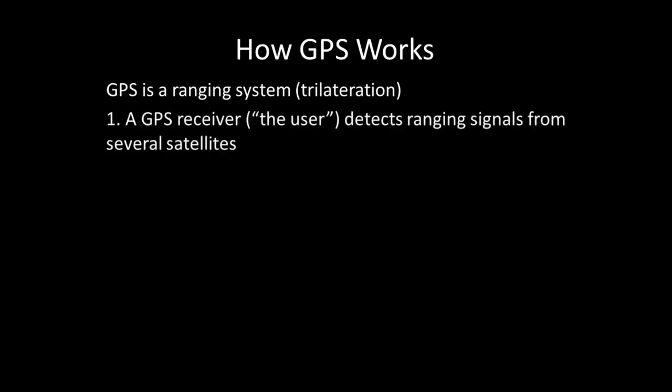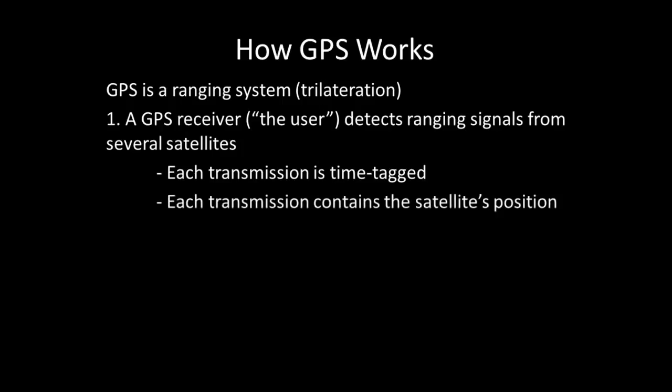Here is an overview of how GPS works, described in five steps. GPS is a ranging system. A GPS receiver, or the user, detects ranging signals from several satellites. Each transmission is time tagged, and each transmission contains the satellite's position.